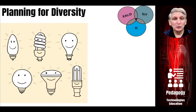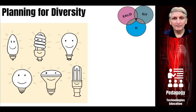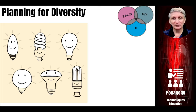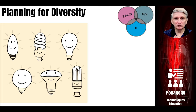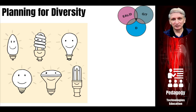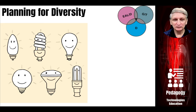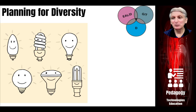We also have our cross-curriculum priorities: Aboriginal and Torres Strait Islander histories and cultures, Asia and Australia's engagement with Asia, and sustainability. Sustainability is a big one throughout particularly design and technology, but there are also opportunities to explore digital technologies in relation to Aboriginal and Torres Strait Islander histories and cultures, and our neighbours in Asia. We also need to plan for diversity — we've talked about differentiation, but we need to ensure that all of our students achieve success in their learning rather than just doing generic teaching.